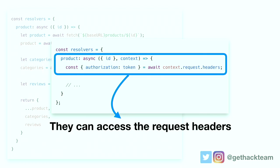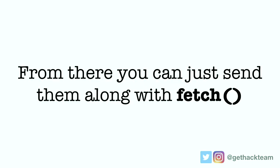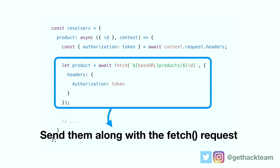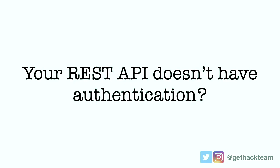Once you have the token information in your resolvers, you can access the request headers and get the token information, then just pass it along with the fetch function. This is a scenario where your REST API already has authentication — we're just assuming JWT tokens are already applied to your REST API and you're passing along the information. If this is your scenario, it's really easy to build a GraphQL server on top because you don't need to handle authentication. But maybe your REST API is only available internally, or not all endpoints have authorization yet.